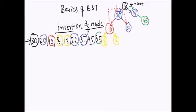Now we add 35. Is 35 greater than 30? Yes, so we move down. Is 37 greater than 35? Yes, so it has to be on the left hand child of 37. There is nothing on the left hand child, so we add 35 as the left child of 37. This is the insertion mechanism.